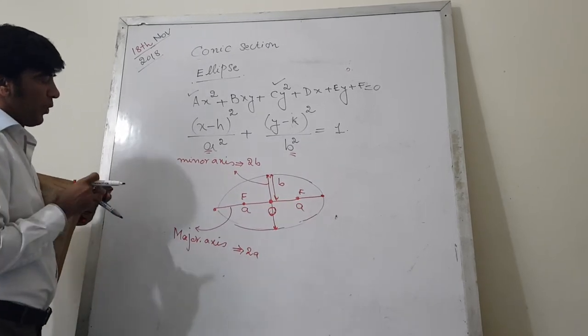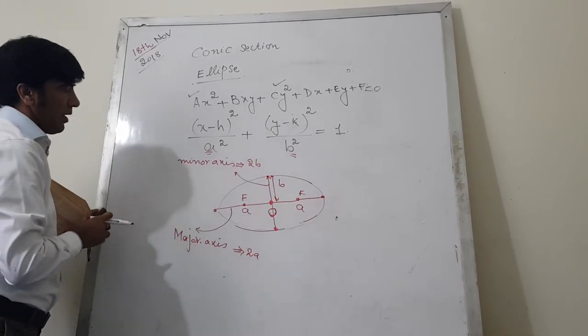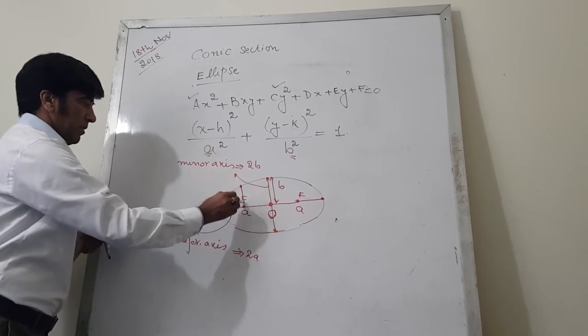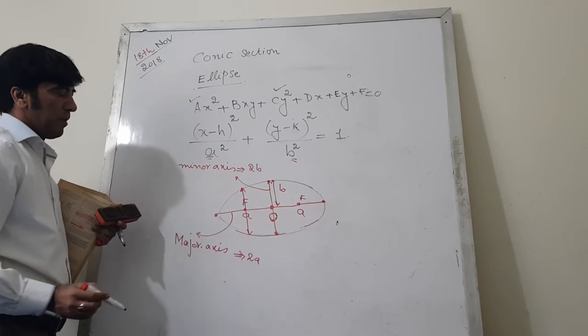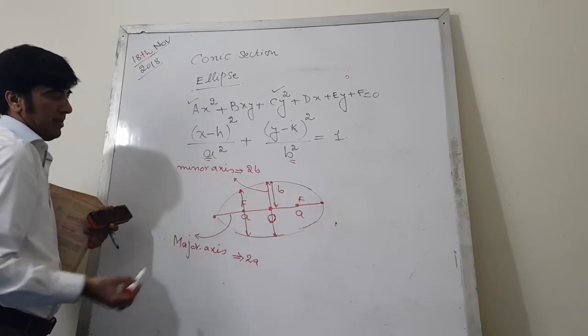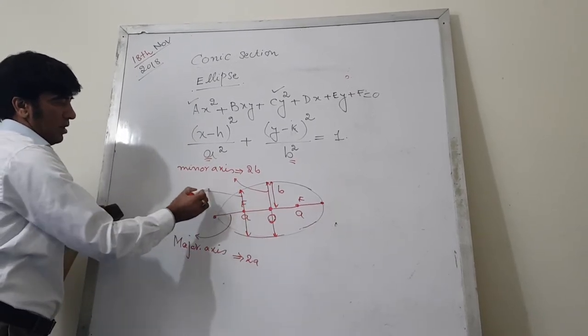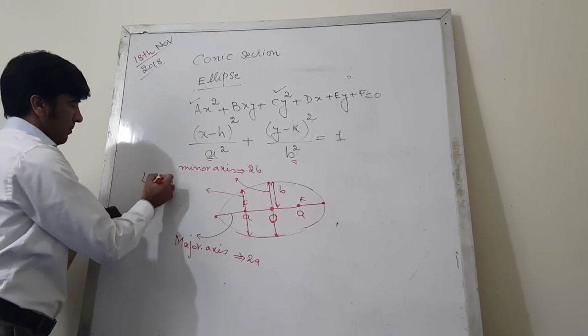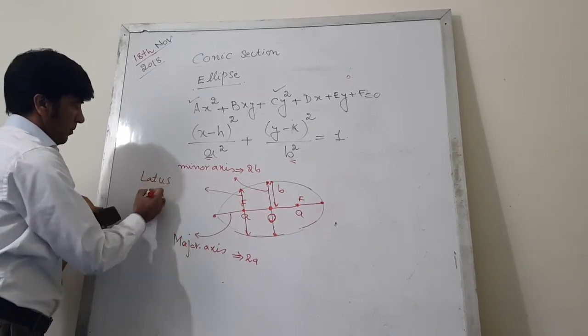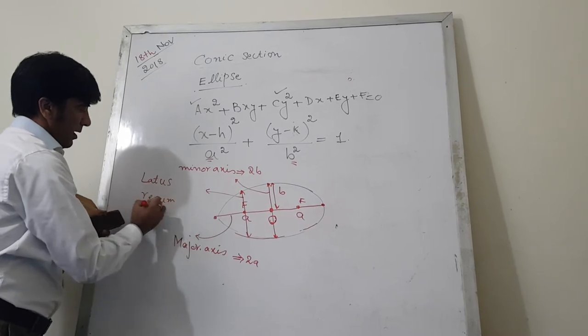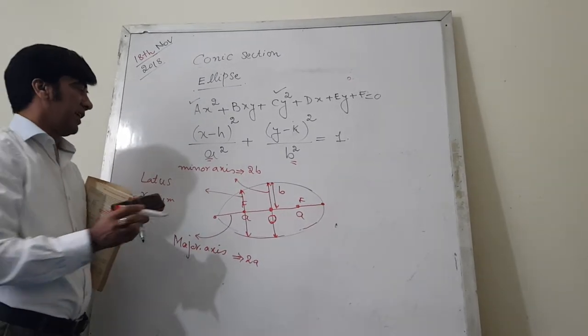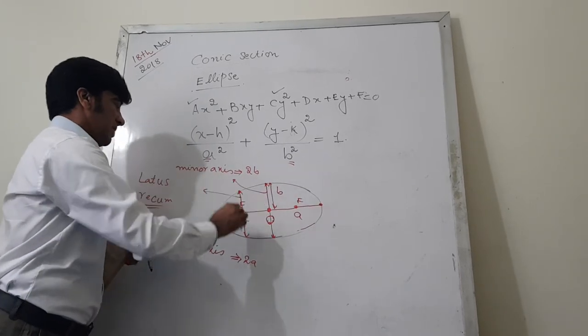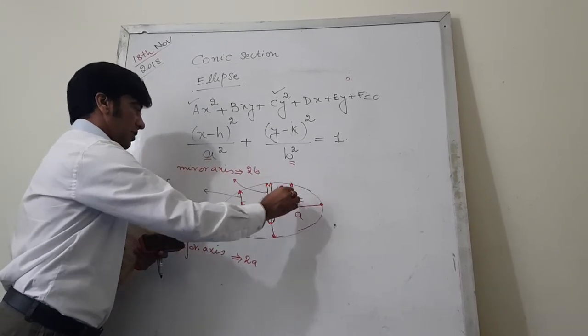In the same way, there is a line that passes through the focus point and perpendicular to the major axis called latus rectum. In case of ellipse you will have two lines of latus rectum - one is this one, the other one is this one.